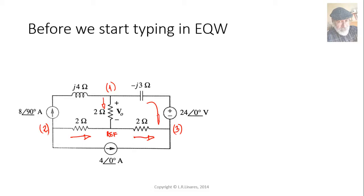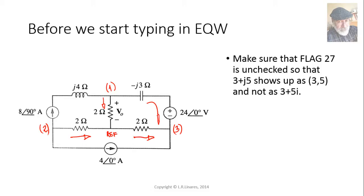Before we start typing in the Equation Writer, make sure that flag 27 is unchecked. Otherwise, your complex numbers will appear in binomial form — 3 plus j5 will not show as (3, 5), which is the way I prefer, but will show as 3 plus 5i, which I find annoying, mostly because the screen real estate is rather small.